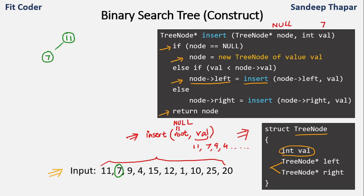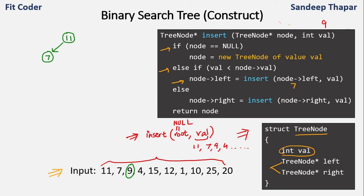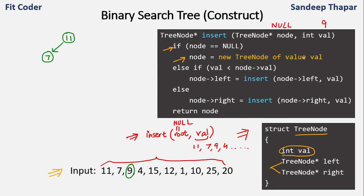For value 9: 9 is less than 11 so we go left to node 7; 9 is greater than 7 so we go right. Since the right of 7 is null, we create a new node 9 and link it to the right of 7. This shows the pattern: when a new value is less than the current node we go left, and when greater we go right.